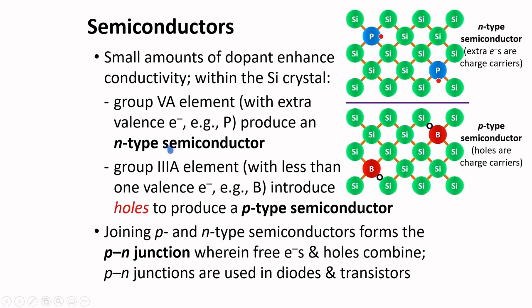In another case, group 3A elements — those with one less valence electron compared to silicon, for example boron — introduce holes to produce a p-type semiconductor. P means positive charge carriers. Because boron has one less valence electron, holes become readily available as charge carriers.